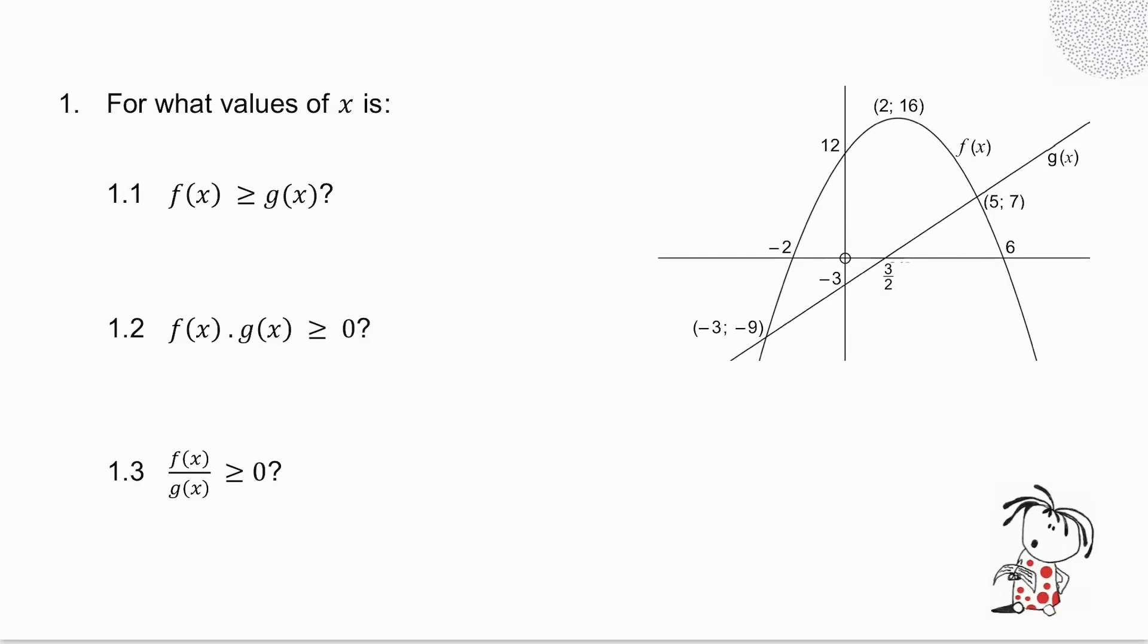Alright, so where is f(x) greater than or equal to g(x)? My parabola is f(x), my straight line is g(x). So where is the parabola above the straight line? It's above the straight line there. So those are the values I want. My x value here is minus 3, and my x value there is 5. In other words, I'm going from minus 3 up to 5. So when x goes from minus 3 up to 5.